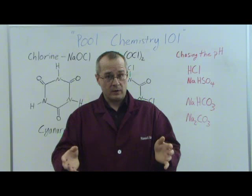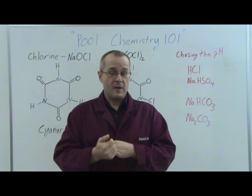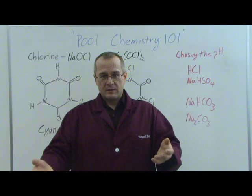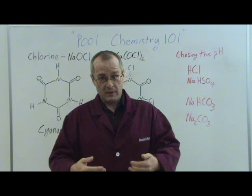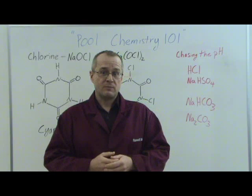A pH of 7.4 is the optimum for sodium hypochlorite to work. In order to keep it there, you have to add either an acid or a base depending on what your pool pH is. So you go in on a Saturday morning, take a sample from your pool water, find out the pH — and if it's pH 9, that's way too high, and you've got to bring it down. In order to bring the pH down, you have to add an acid.